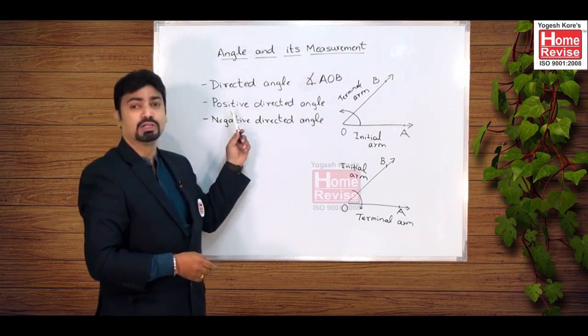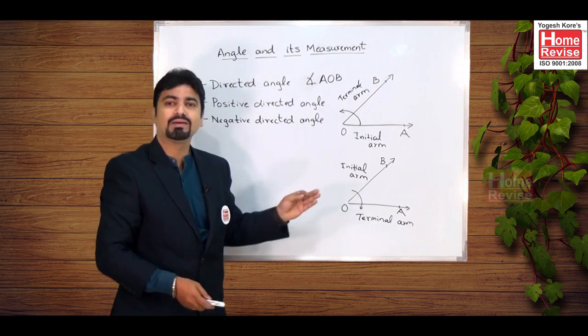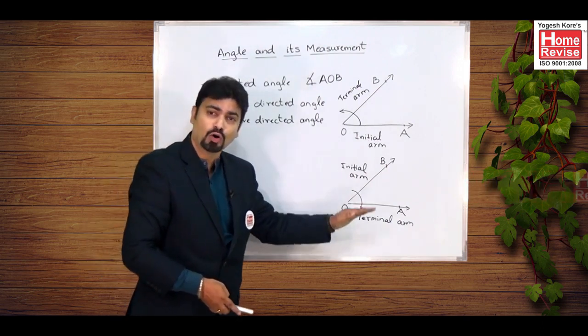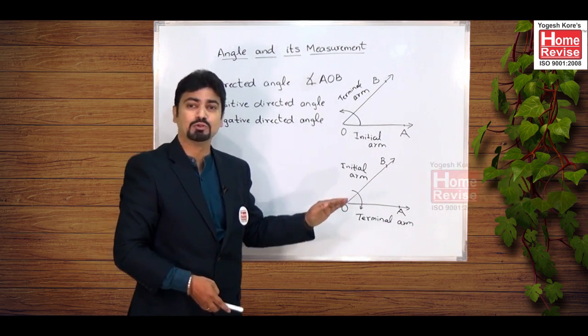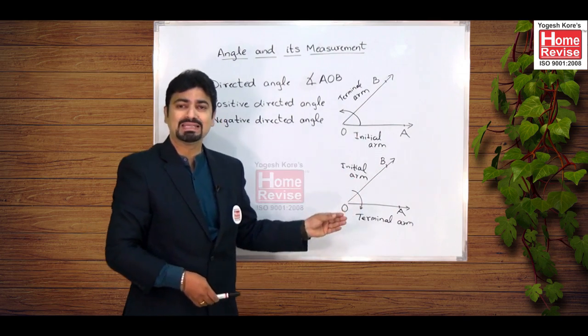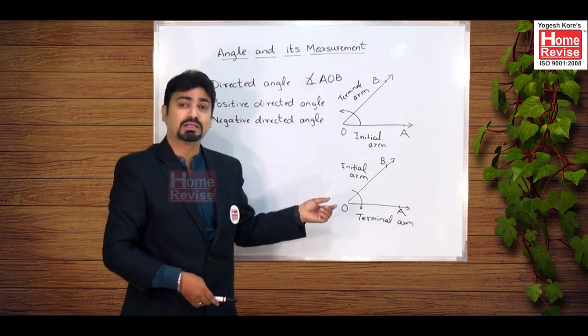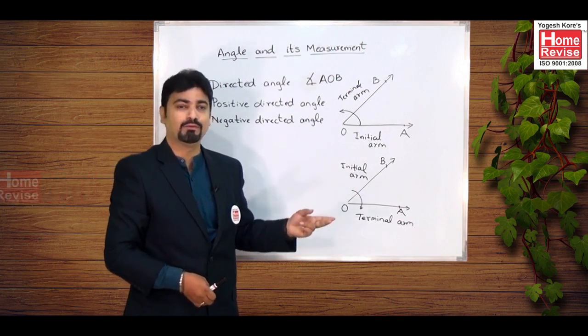Similarly, a directed angle drawn in clockwise direction will have a negative measure and hence it is known as negative directed angle. Now although in these two cases the value of the measure, the magnitude of the measure, is same, however the signs will be different.